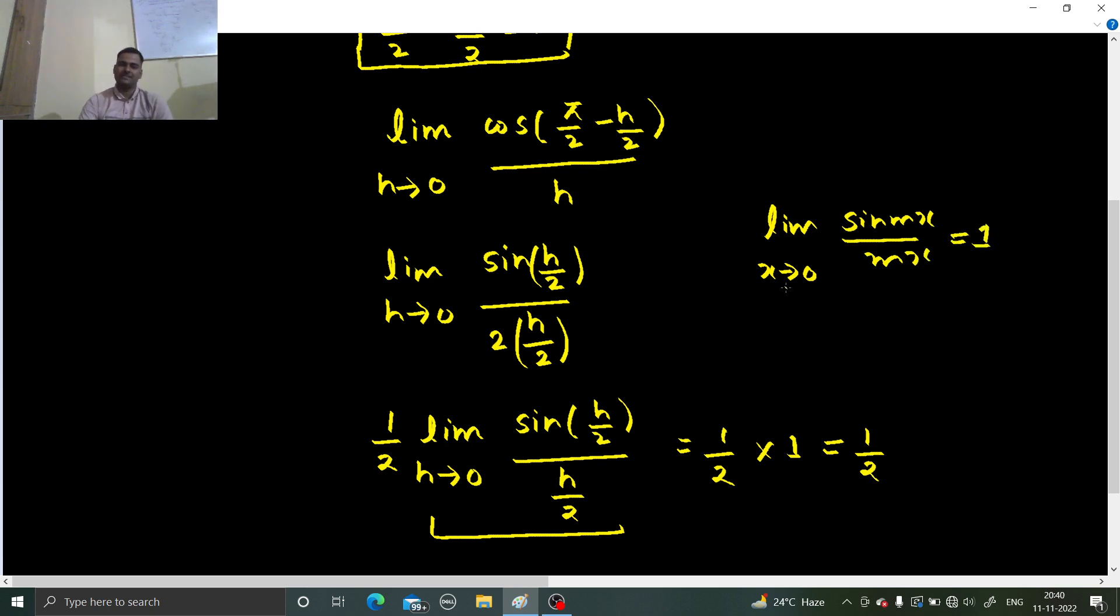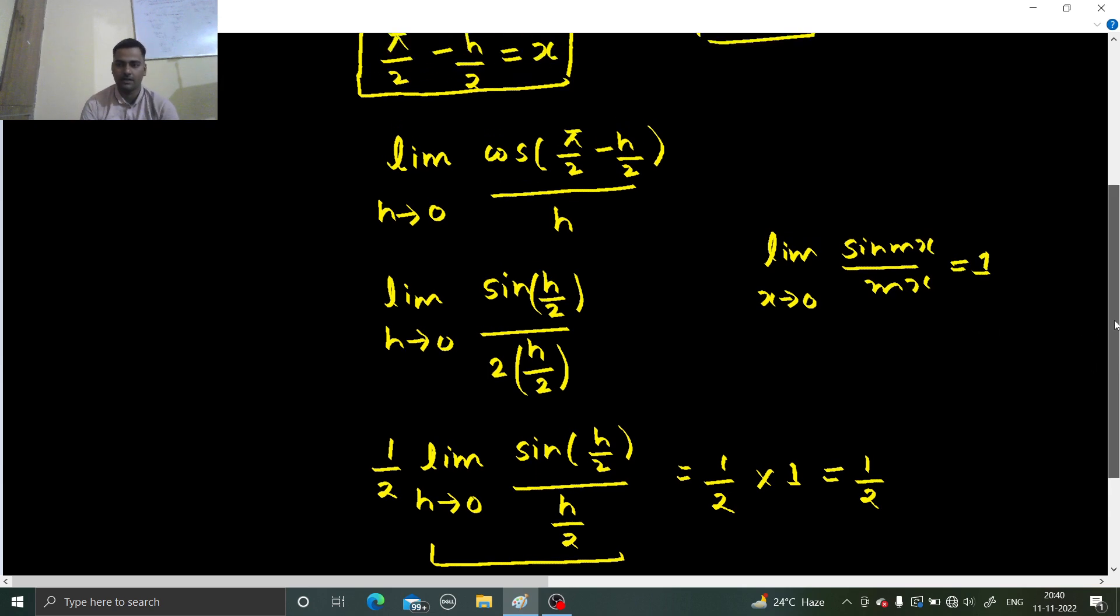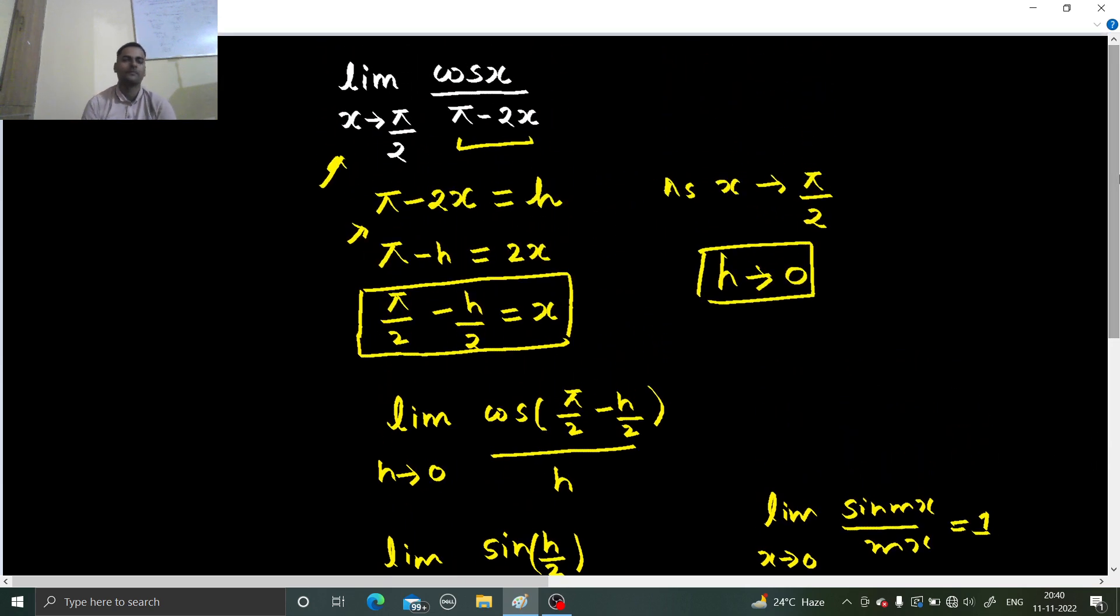Variable is x, variable is h that does not matter, the value of limit does not change. So you get half as your answer. Can there be another way to solve this?